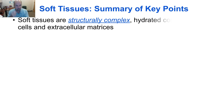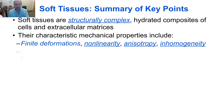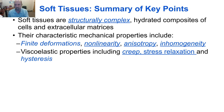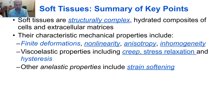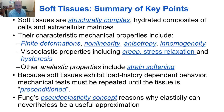In summary, soft tissues are structurally complex, hydrated composites of cells and extracellular matrices. The characteristic mechanical properties include finite deformations, non-linearity, anisotropy, and inhomogeneity. They have viscoelastic properties including creep, stress relaxation, and hysteresis, and other anelastic properties such as strain softening. However, finite deformations, non-linearity, anisotropy, and inhomogeneity can all be handled within the framework of elasticity. Because soft tissues exhibit load history dependent behavior, mechanical tests must be repeated until the tissue is preconditioned. Fung's pseudo-elasticity concept provides a rationale for why elasticity can nonetheless be a useful approximation for soft tissues in many situations.